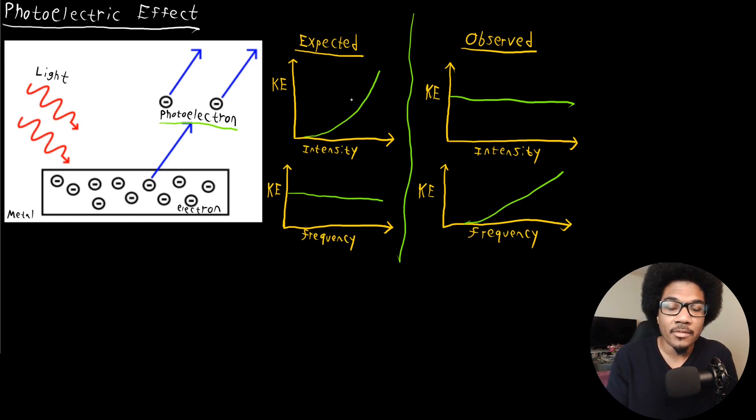So basically saying that it doesn't matter what portion of the electromagnetic spectrum you're at, you can increase the energy of electromagnetic radiation by increasing the brightness of the light, the amplitude of the light.